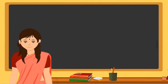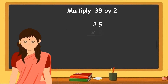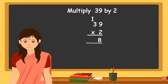The next sum is: multiply 39 by 2. Write the multiplicand 39, below that put the multiplication symbol and write the multiplier 2. Then start multiplying. First, 2 into 9 is equal to 18. 18 is a two-digit number, so we leave 8 in the units place and carry over 1, writing it above the tens digit in the multiplicand.